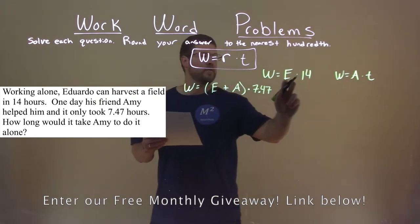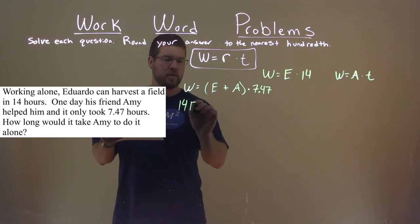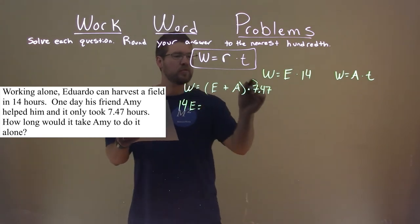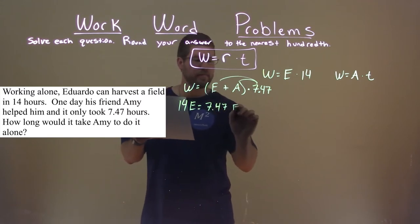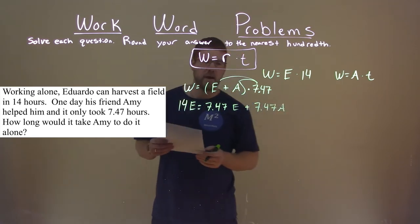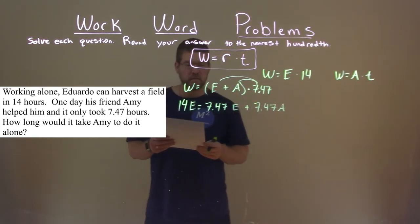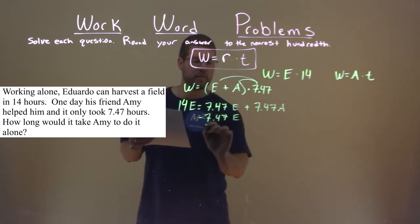So, we know the work is equal to E times 14, or 14 times Eduardo's rate. We're going to distribute the 7.47 to both parts here, 7.47E plus 7.47A. Now, let's combine our like terms. I'm going to subtract the 7.47E from both sides.